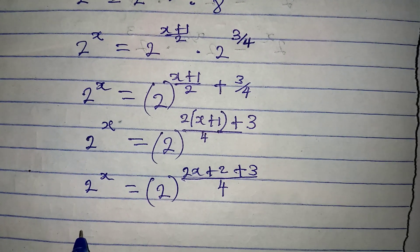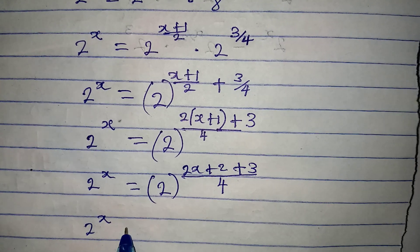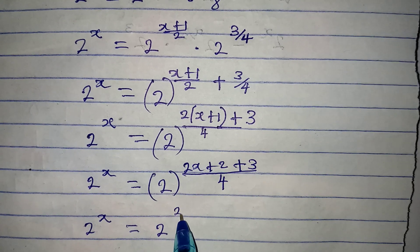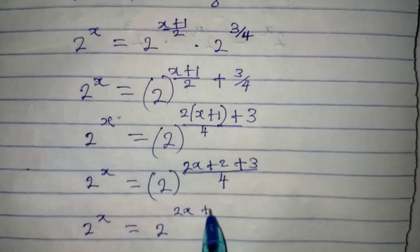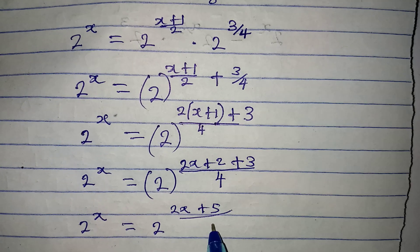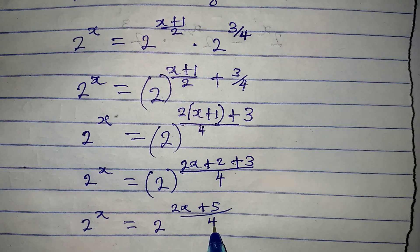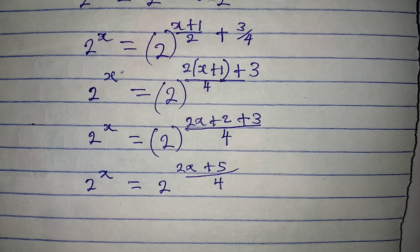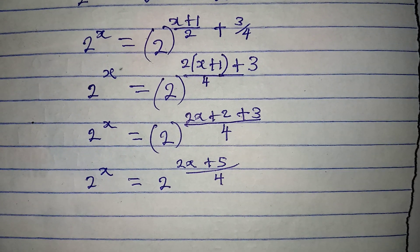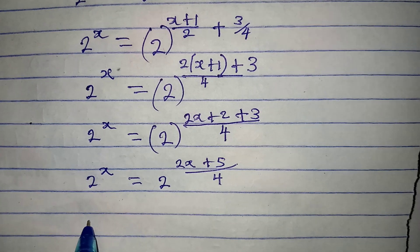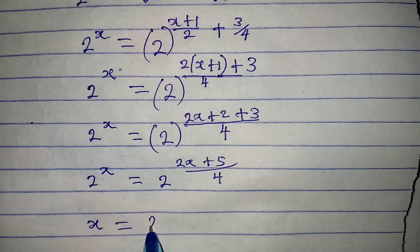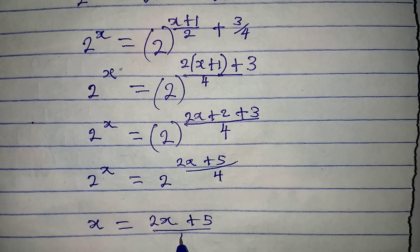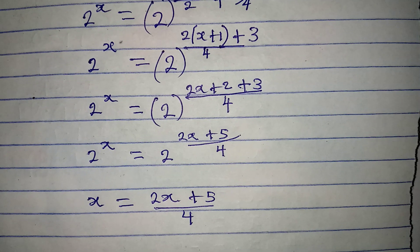So 2 to the power of x is equal to 2 to the power of (2x + 5) over 4. Now we have the same base on both sides, so we can equate the powers, meaning x equals (2x + 5) over 4.